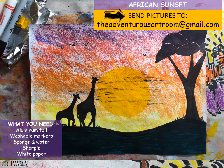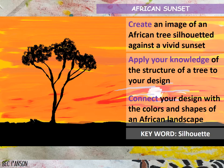Hello, my most adventurous artists, and welcome to the Adventurous Art Room. Today we are focusing on African sunsets. Remember you can always send your finished pieces to the Adventurous Art Room at gmail.com. What you're going to need today is some aluminum foil, washable markers, a sponge and water, a Sharpie if you have one, and some white paper.